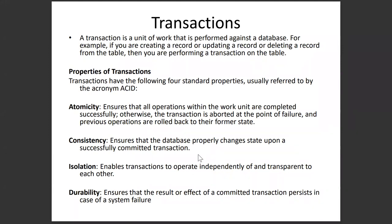What does atomicity mean? It basically ensures that all the operations in a particular transaction are executed successfully and the work we were trying to do has been done. If at any point any failure occurs, it rolls back everything to the previous point before the start of the transaction. For example, if there are 10 records in a table and I'm trying to add an 11th record but a database connectivity or storage issue occurs and the transaction cannot complete, atomicity ensures that the original 10 records remain as-is within the system.